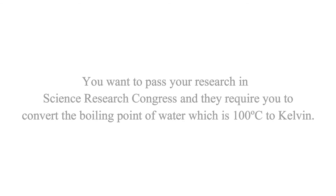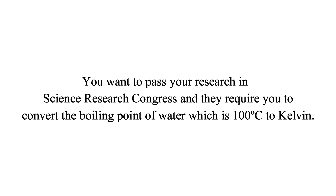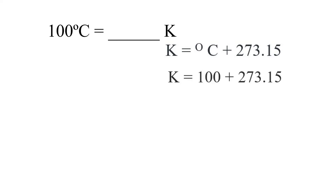Similarly, it is easy to convert a Celsius scale to a Kelvin scale. For example, if you want to present your research at a Science Research Congress and they require you to convert the boiling point of water — 100 degrees Celsius — to Kelvin, use this formula. Substitute 100 for degrees Celsius. The sum of 100 and 273.15 is 373.15. The boiling point of water in Kelvin is 373.15.